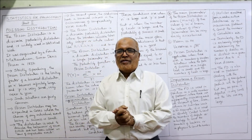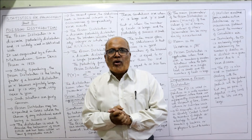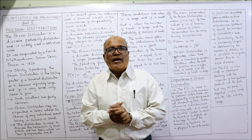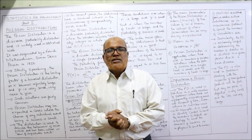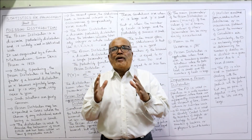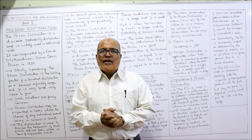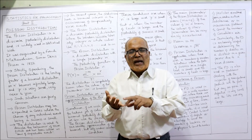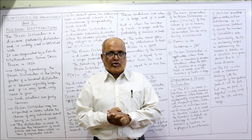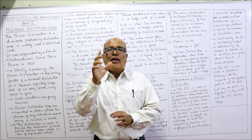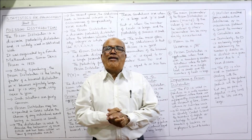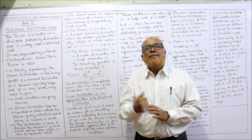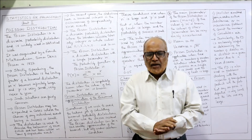Hello viewers, welcome to my channel. I'm Hashem Ali Khan. In my last video I completed problems on binomial distribution, and one video was given completely on explanation and theory regarding theoretical distributions and binomial distribution. Now I'm going to start the next distribution, that is Poisson distribution. Theoretical distributions can be broadly classified into two categories: distributions for discrete series and distributions for continuous series. Both binomial and Poisson distributions are for discrete probability distributions.